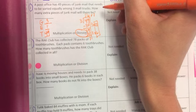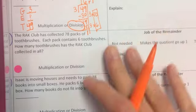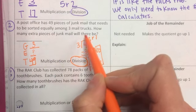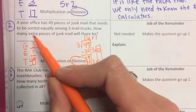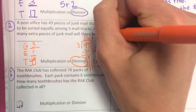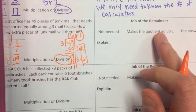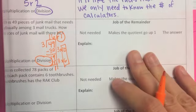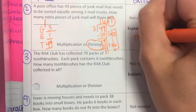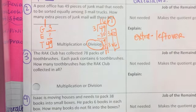So I have to go back now and decide where this information applies. What in the world am I going to do with all that I have here? So how many extra pieces of junk mail will there be? That's my question. If I'm thinking about extra pieces, I'm thinking about what's left over. And which number here represents the leftover amount? The 1. So 1 is my answer. And if I think about what the job of the remainder here is, my remainder is actually the answer to my question. It's the answer because the extra is talking about the leftover amount, also known as the remainder.